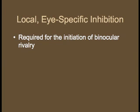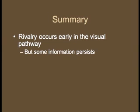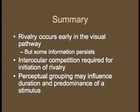Other studies indicate that local eye-specific inhibition is required for the initiation of binocular rivalry. In summary, rivalry occurs early in the primary visual cortex. Not all is suppressed, however — some information reaches higher levels of processing, such as the amygdala. Interocular competition, involving inhibitory connections between neurons, is required for the initiation of binocular rivalry. Finally, perceptual grouping, via excitatory connections between neurons, may influence the duration and predominance of a stimulus.